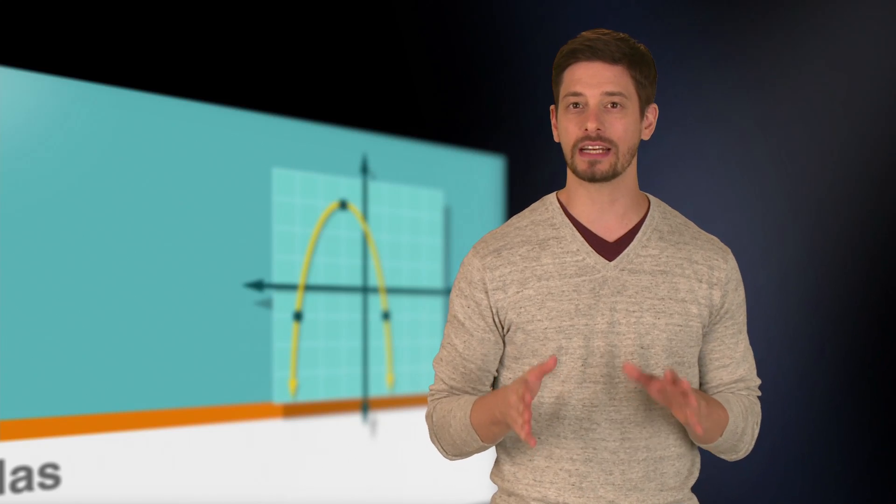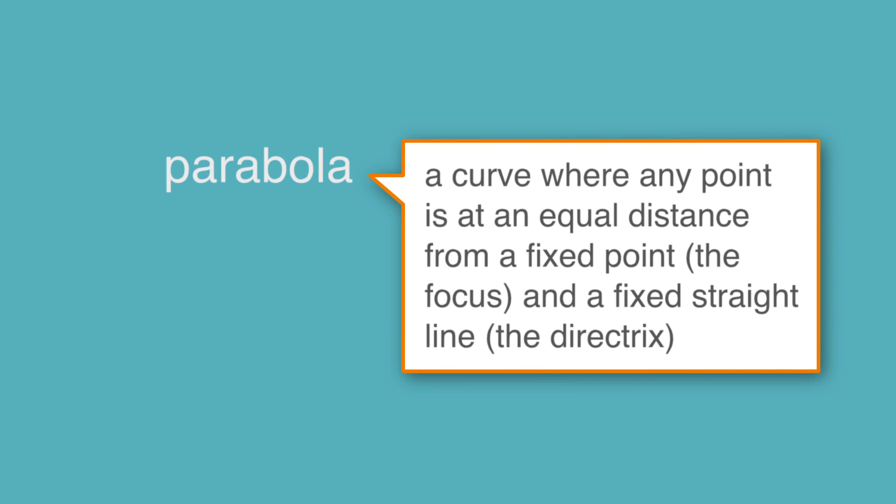Let's start by defining a parabola. A parabola is a curve where any point is at an equal distance from a fixed point, the focus, and a fixed straight line, the directrix.